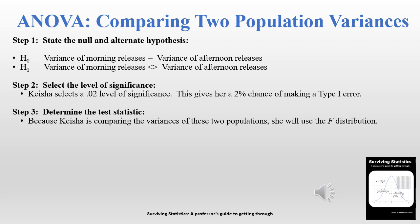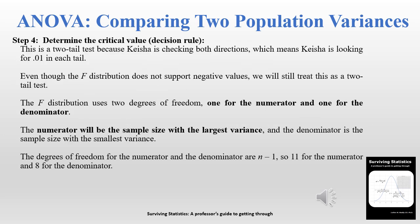Step three is to determine the test statistic. Because she's comparing variances and working with the ANOVA, she will use the F statistic. Step four is to determine the critical value. We're using the F statistic and it's a two-tail test, which means she is looking for 0.01 in each tail. Even though the F distribution does not support negative values, we still treat this as a two-tail test.